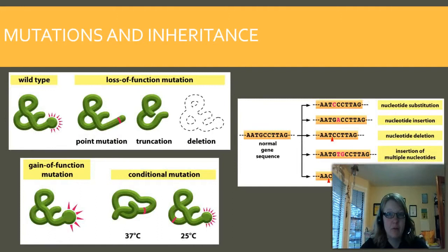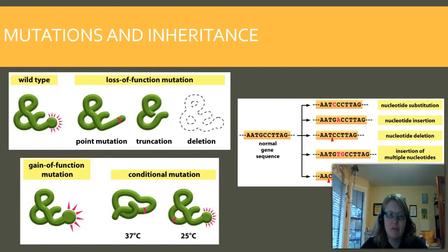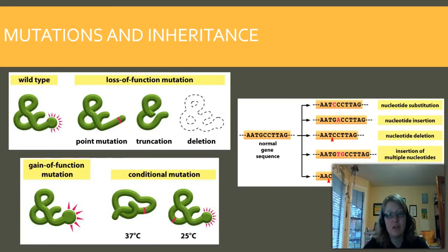One last note before we move to topic three: mutations. We've talked about mutations before in unit two, so feel free to review those. Mutations and inheritance can create several outcomes. We have the wild type — our normal functioning protein — and then three types of loss-of-function mutations: a point mutation (insertion of a nucleotide or base change causing a different amino acid), a truncation (where a stop codon appears earlier), and a deletion (where the protein doesn't work at all). We also have gain-of-function mutations — importantly, these are not always positive, as an overactive protein can cause a lot of damage. And there are conditional mutations that only work at certain temperatures, which can also be problematic.